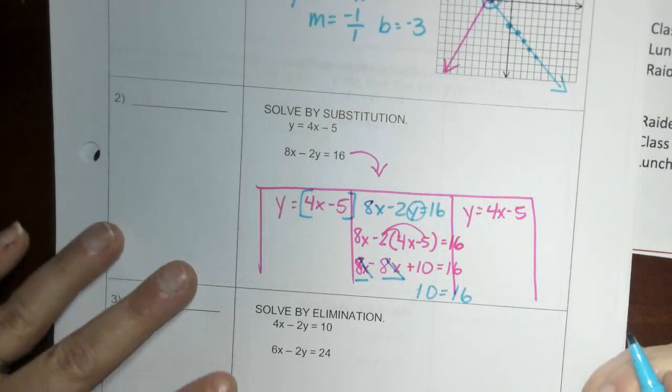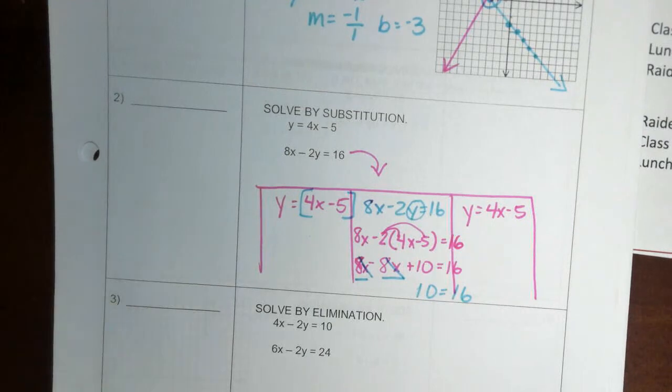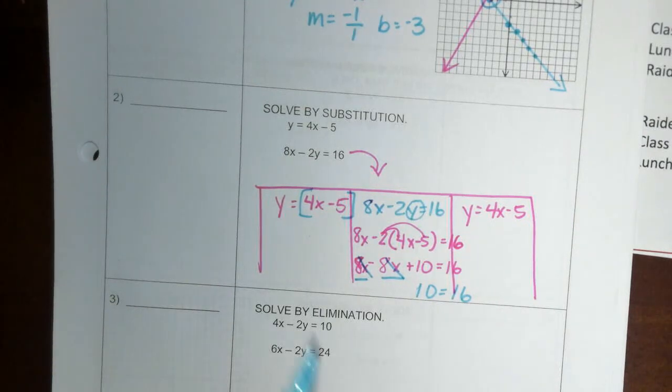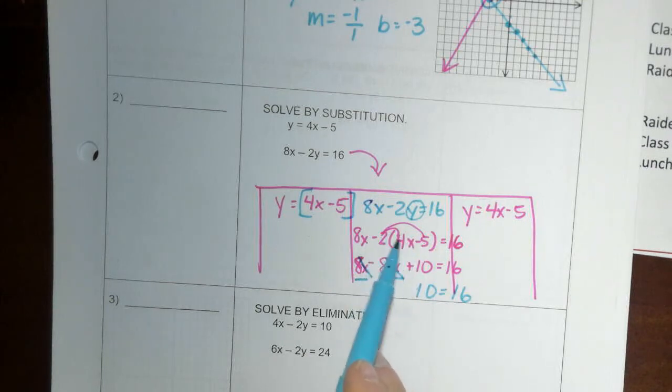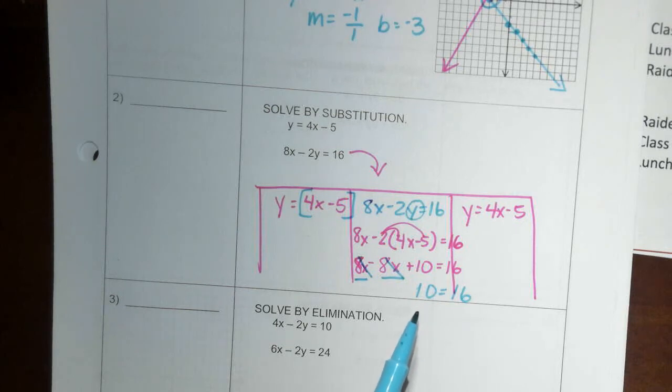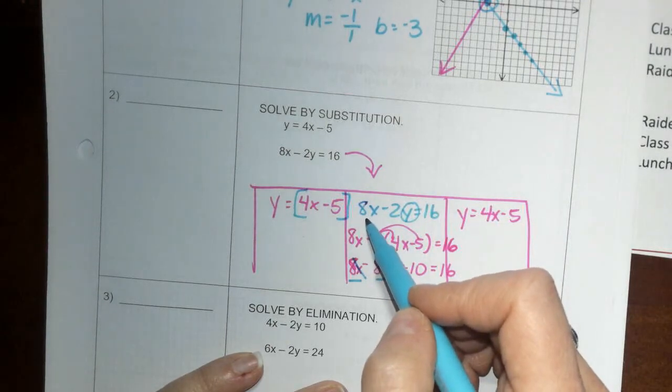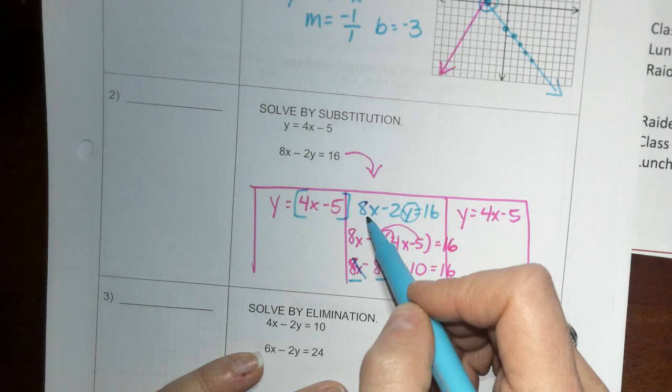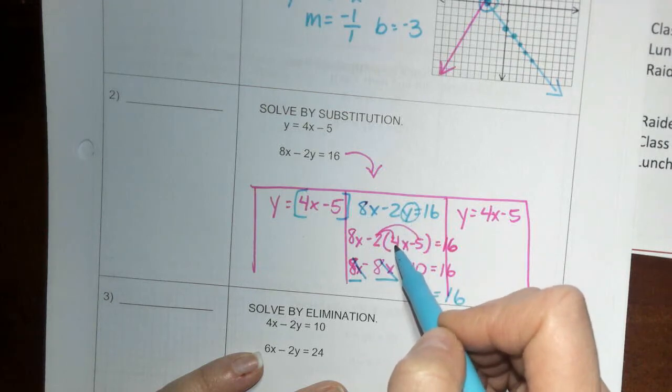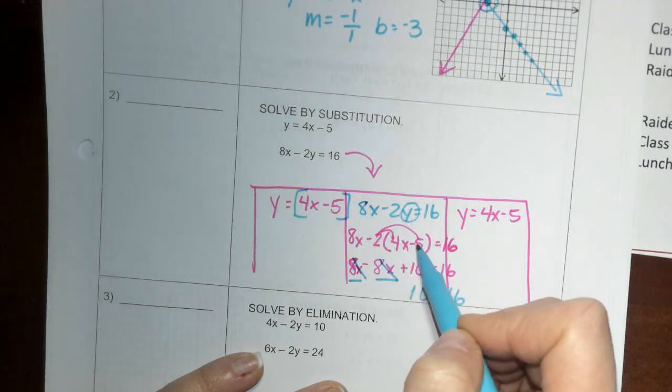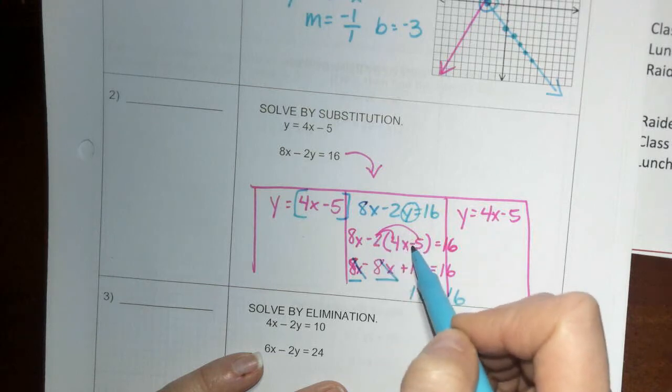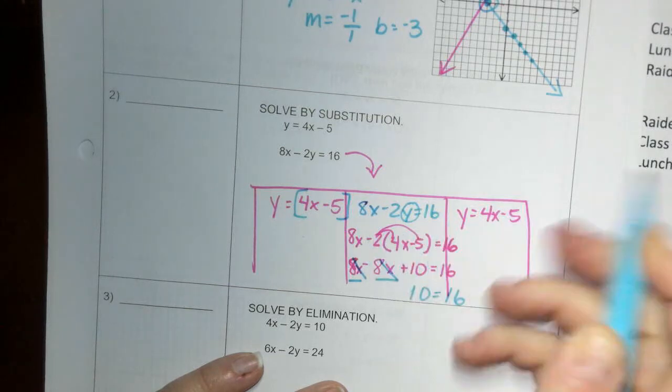10 equals 16, no. Wait, I must have done something right. No, I did that right. 8x minus 2y, our y is 4x minus 5. Yep.